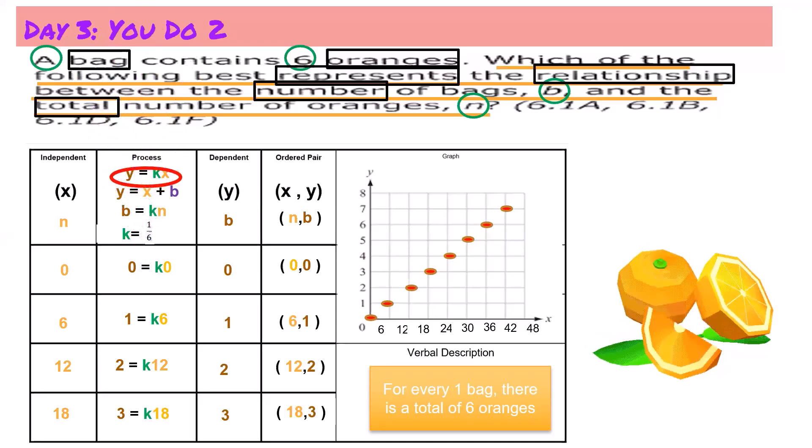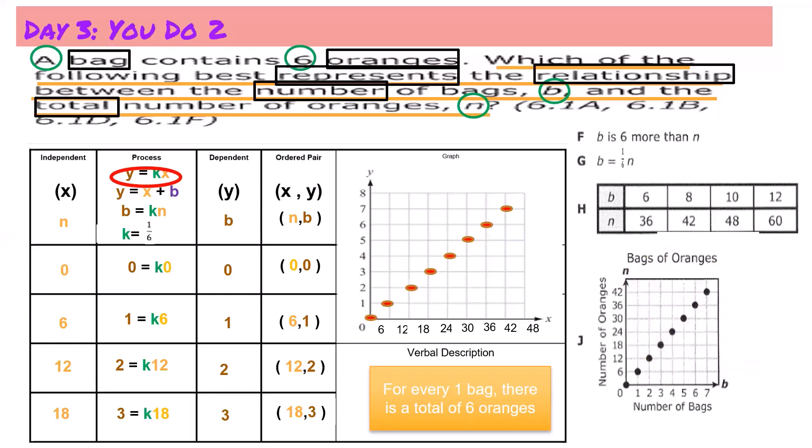Now let's look at our answer choices. L: b is 6 more than n. Well, when we look at our table we can obviously see that n has the greater values, so this answer would be false. Now when we look at H, 6 over 36 does have a rate of 1 over 6 or a constant rate of proportionality of 1 over 6, but 8 over 42 does not, neither does 10 over 48 or 12 over 60. So this answer is not true. It is false because it does not have a constant rate of 1 over 6 or a constant rate of proportionality of 1 over 6.